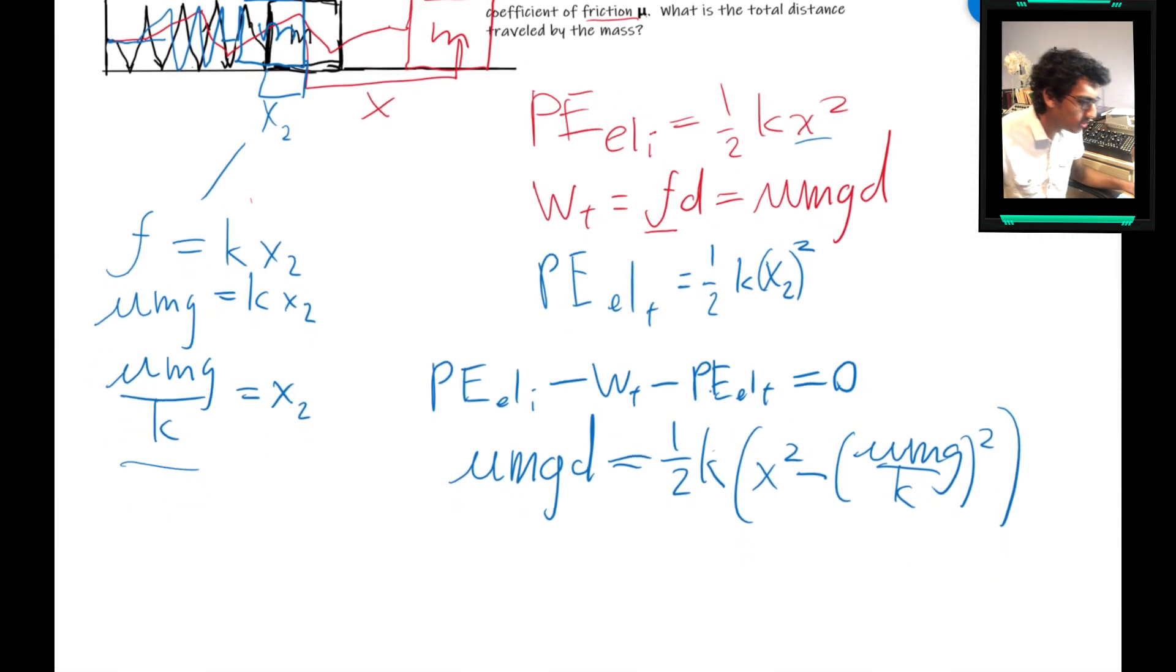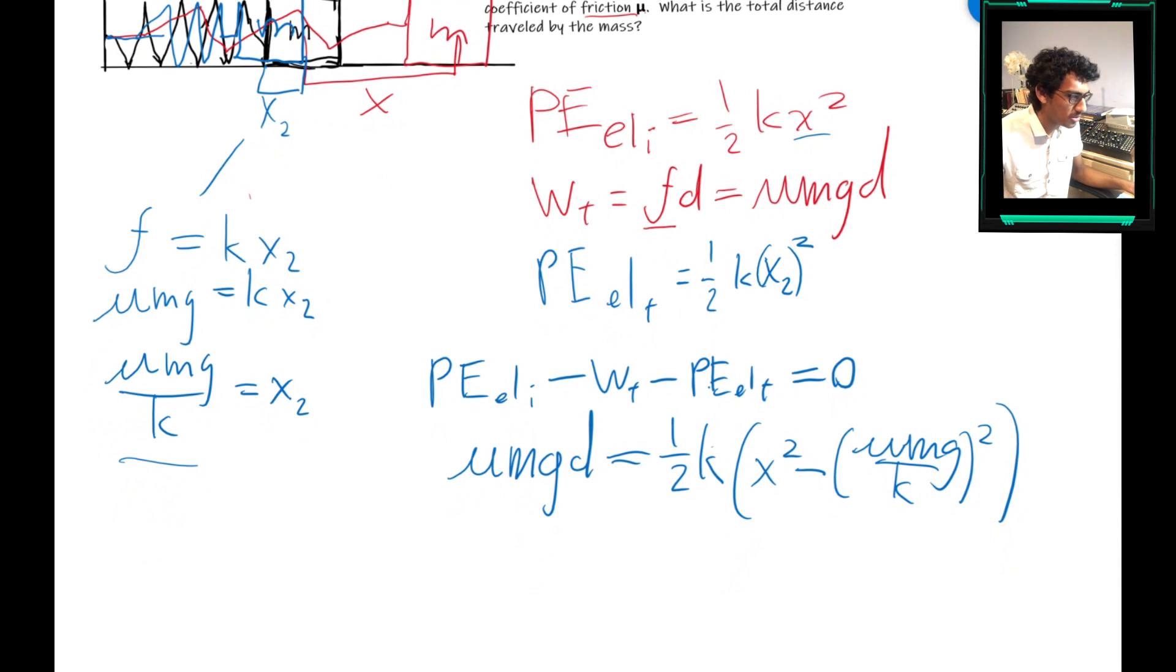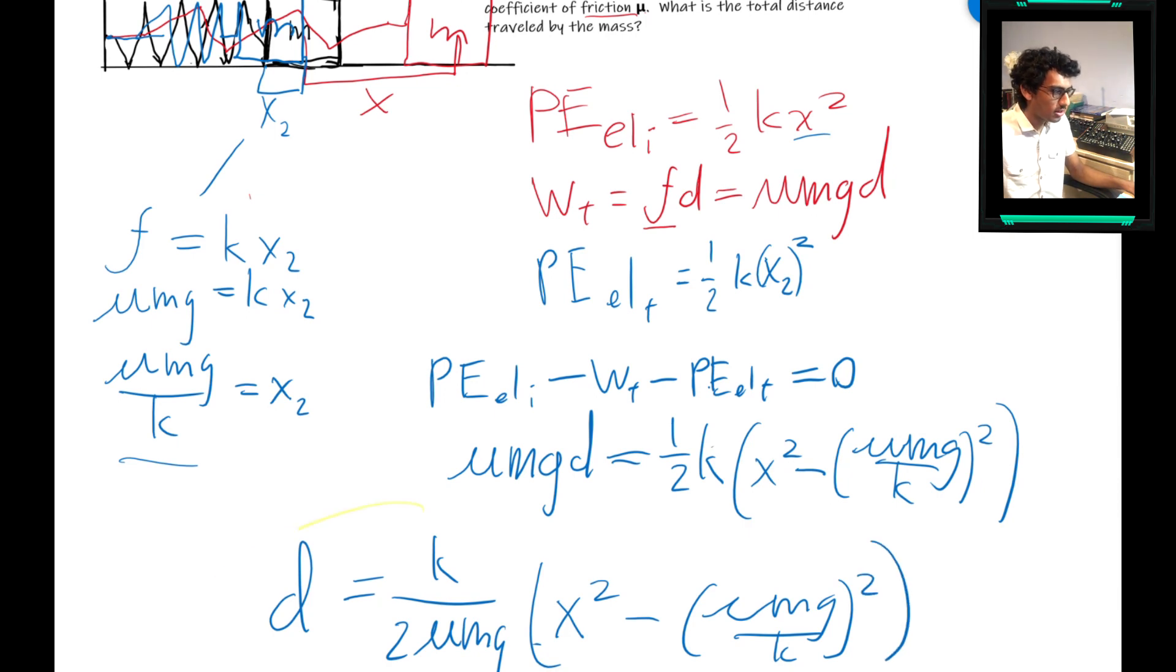And now we want the whole thing in terms of d. So that would equal k over 2 mu m g times x squared minus mu m g over k squared. And this is your answer.